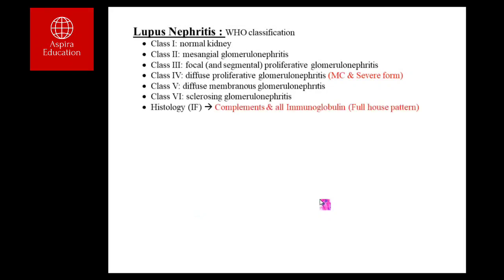Class VI is sclerosing glomerulonephritis, where more than 50% of glomeruli have been globally sclerosed. Histologically, a characteristic finding of lupus nephritis is the full house pattern — under immunofluorescence, you find all antibodies (IgM, IgG, IgA) plus complement in the glomerulus. While not pathognomonic, in the MRCP exam, full house pattern on kidney biopsy should prompt a diagnosis of lupus nephritis.